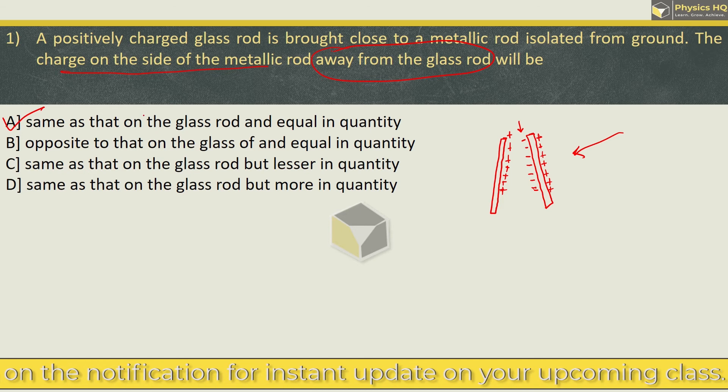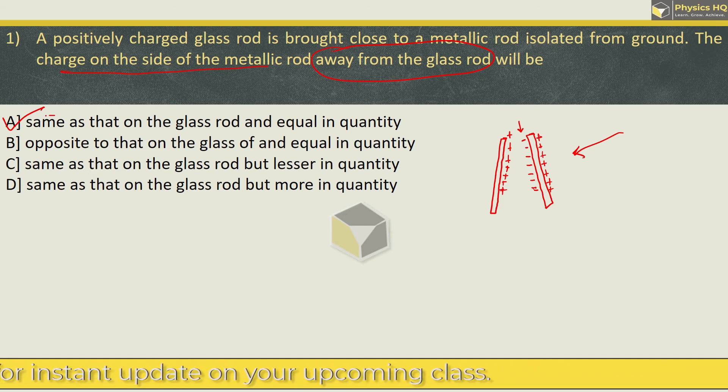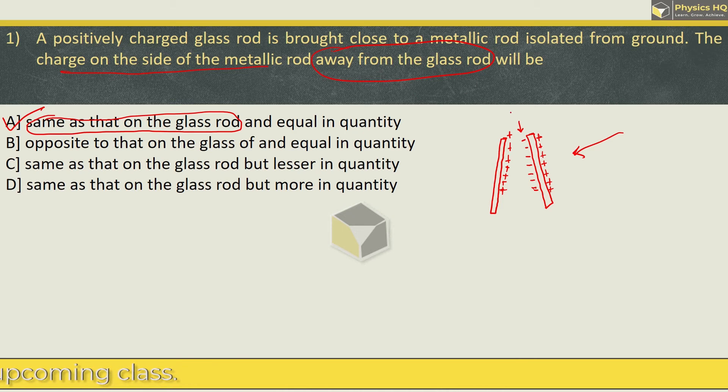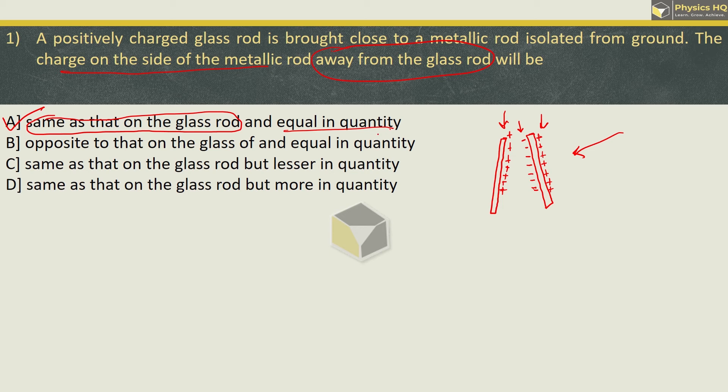So the correct option is option A. The charge on the side of the metallic rod away from the glass rod will be same as that of the glass rod. So here we have a positive charge here and here we have a positive charge. And they are equal in quantity. Hope you all understood this.